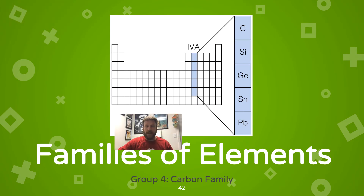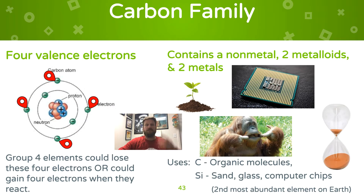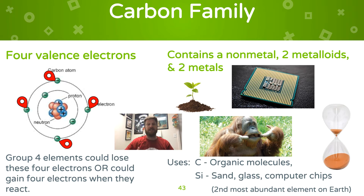The fourth family on the periodic table has carbon at the top, so it's called the carbon family. These elements have four valence electrons. They will either lose or gain four valence electrons depending on what they're bonding or reacting with. This family is unique — it contains a non-metal at the top, then two metalloids, and then two metals at the bottom. The most common element in this family is carbon, the organic molecule — all life is based on carbon. Silicon is the second most abundant element on earth, makes up computer chips, and sand is made of silicon dioxide. If you heat up sand, you get glass.